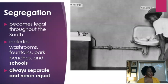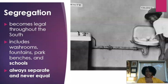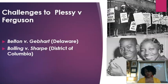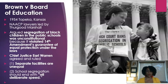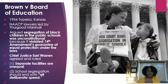What are the implications? Segregation now becomes rampant and legal throughout the South — applied not just to transportation, but also to washrooms, fountains, park benches, and schools. As you can see from the pictures, the accommodations were never equal. They were always separate, but never equal. African Americans did fight back, and we begin to see challenges to Plessy v. Ferguson with Belton v. Gebhardt in Delaware, and right here in the District of Columbia with Bolling v. Sharpe. The major win comes with Brown v. Board of Education, 1954, Topeka, Kansas. NAACP lawyers led by Thurgood Marshall argued that segregation of Black children in public schools was unconstitutional because it violated the 14th Amendment's guarantee of equal protection under the law. Chief Justice Earl Warren agreed and ruled that separate facilities are not equal, and that school segregation had to end with all deliberate speed.